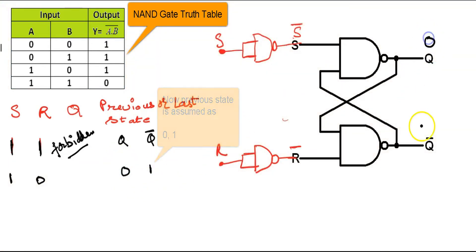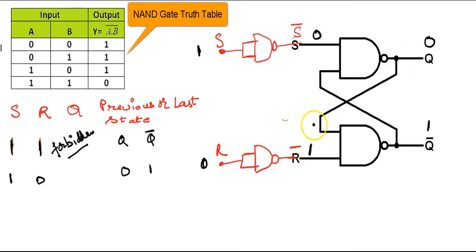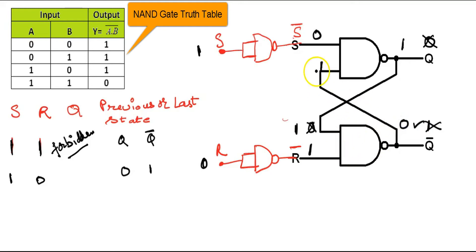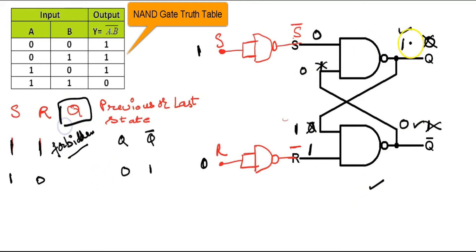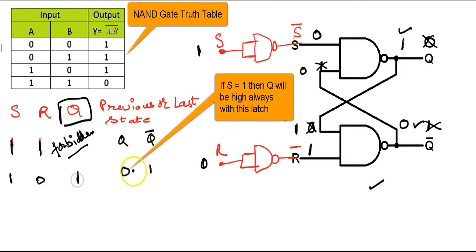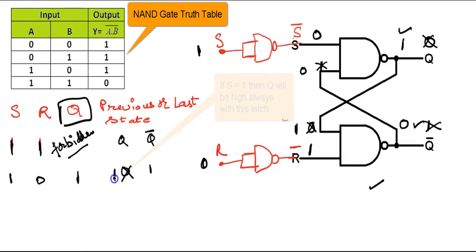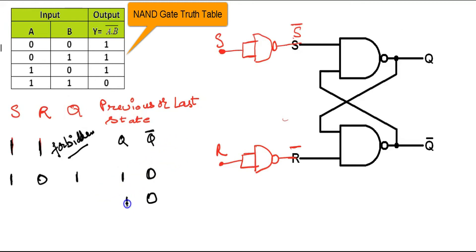Let the previous state be Q = 0, Q complement = 1, and inputs S = 1, R = 0. The NAND gate gives 0. This 0 comes here, and 0,1 gives 1. Then 1,1 gives 0. Then 0,0 gives 1. So Q = 1, Q complement = 0 becomes the stable state.